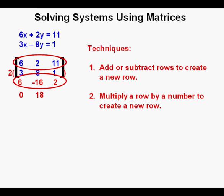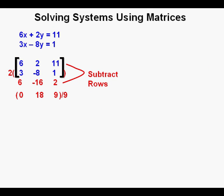2 minus negative 16 is 18. Getting your integer math correctly is critical. And finally, 11 minus 2 is 9. Now, to simplify this last row further, we'll divide all the numbers by 9, which is the same as multiplying the row by 1 ninth using our rule number 2.